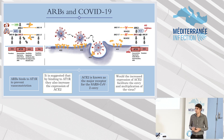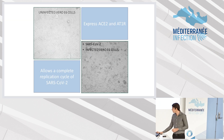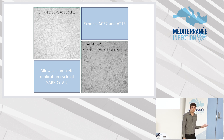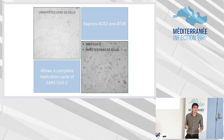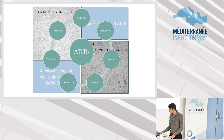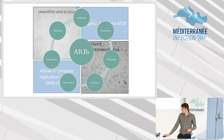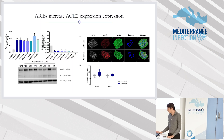So our question is: if this increase occurs, does it facilitate the entry of the virus in the cell? To test this, we chose to use Vero cells because they express the AT1 receptor, they express the ACE2 receptor, and they also allow the complete cycle of SARS-CoV-2 with cytopathic effect. We treated these cells with seven different ARBs for three days and evaluated the effect on the expression of these receptors.